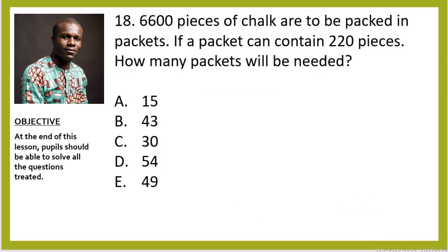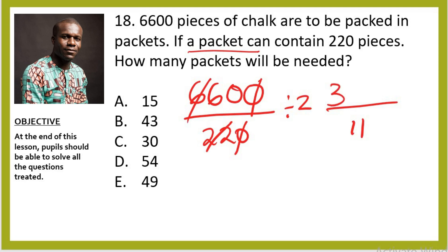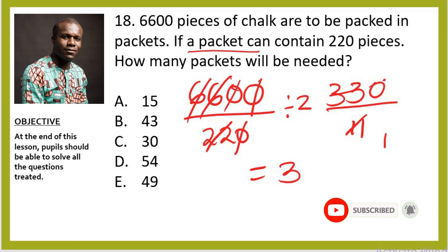Question 18: 6,600 pieces of chalk are to be packed in packets. If a packet can contain 220 pieces, how many packets are needed? 6,600 ÷ 220 — cancel the zeros to get 660 ÷ 22. Divide both by 2: 330 ÷ 11 = 30. So 30 packets are needed, which is option C.